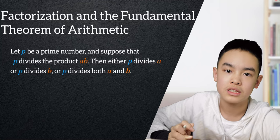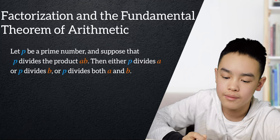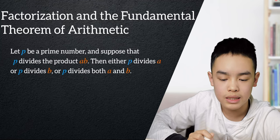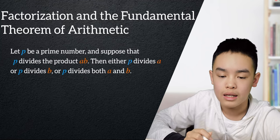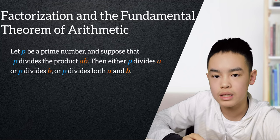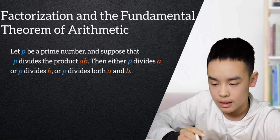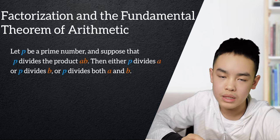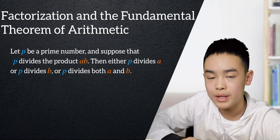So this will be the first theory that we encounter. Let p be a prime number, and we'll say that p can divide the product a times b, then either p divides a or p divides b, or p divides both a and b.